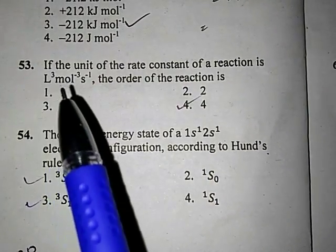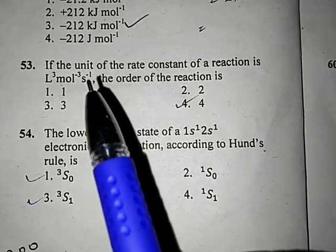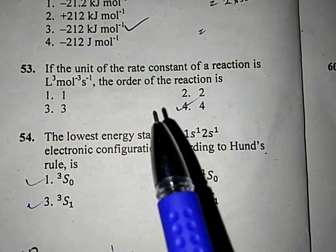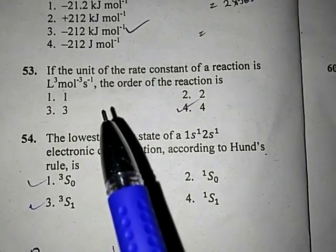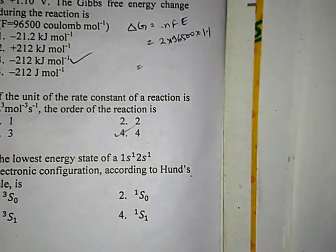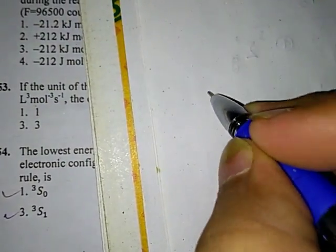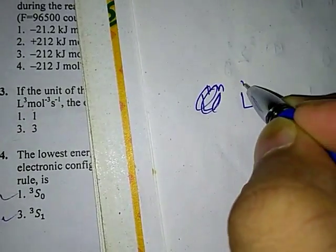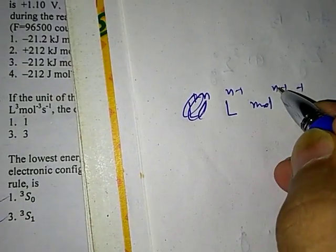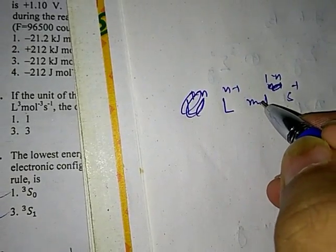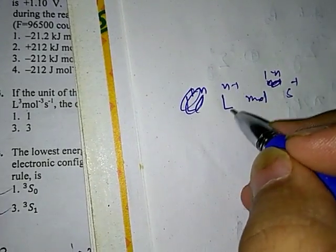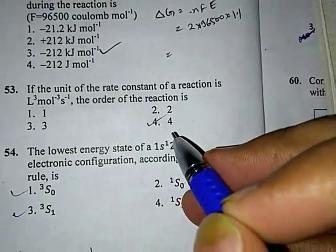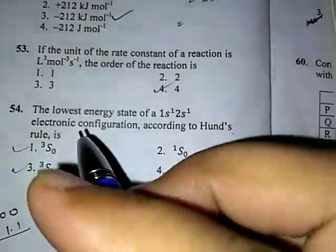The next question gives the unit of the rate constant as L³·mol⁻³·s⁻¹ and asks for the order of the reaction. The unit of rate constant follows L^(n−1)·mol^(1−n)·s⁻¹. Setting n−1 = 3 gives n = 4. So the order of the reaction is four, and the correct option is option number four.